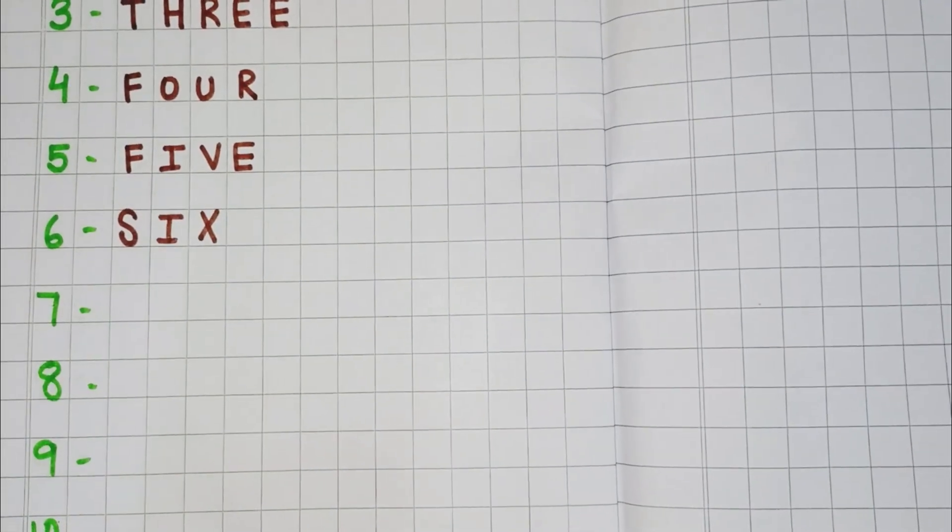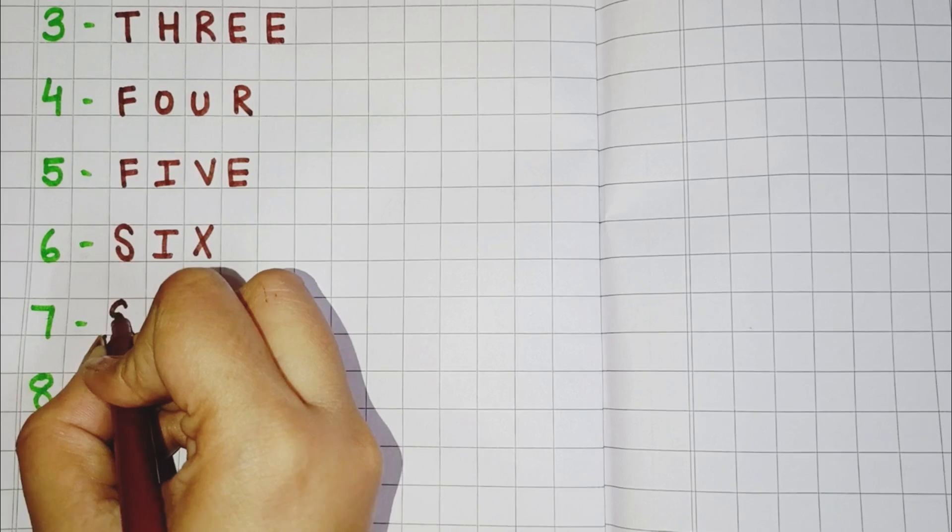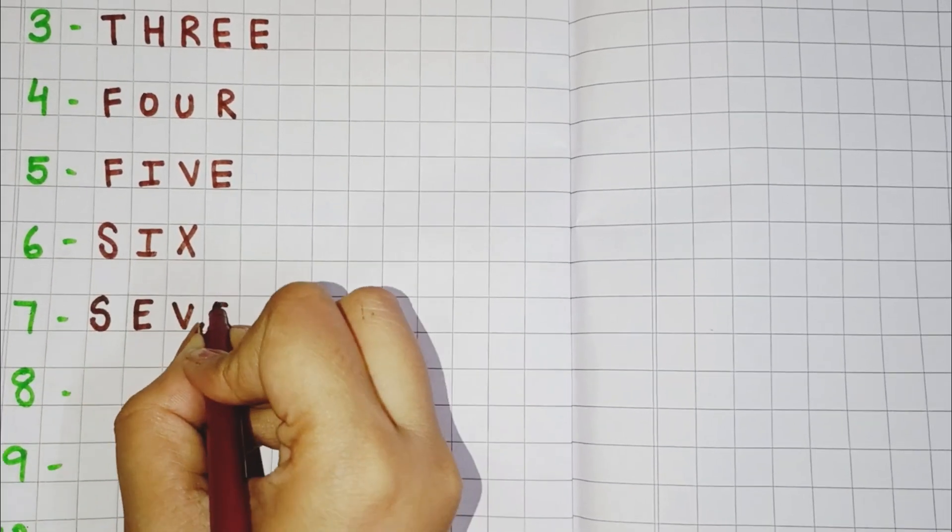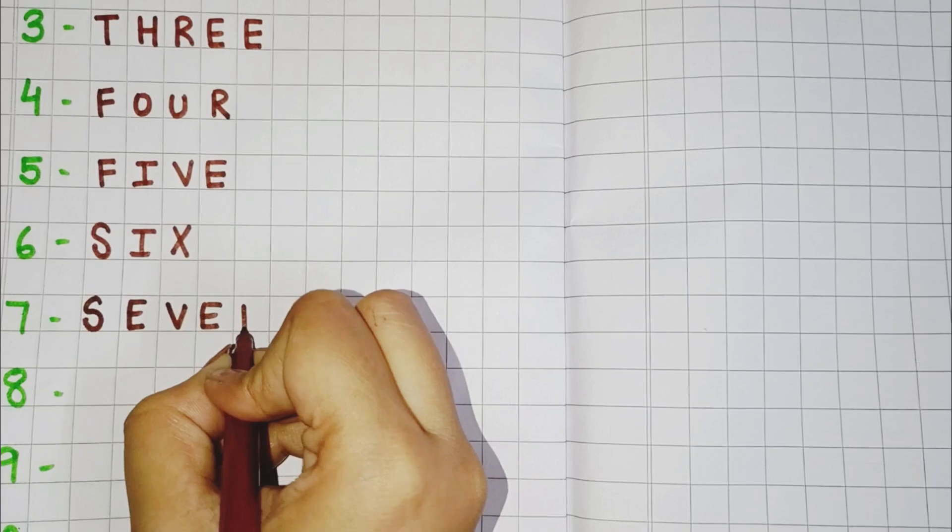Now the next one is 7. So you will write S, E, V, E, N. Seven.